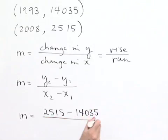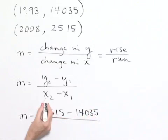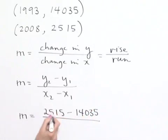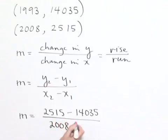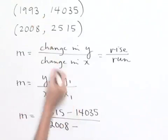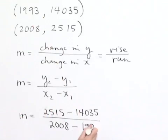We're then going to divide that by, and we have to come back to our second point to get our X value, 2,008, minus the X value from the first point, which is 1,993.